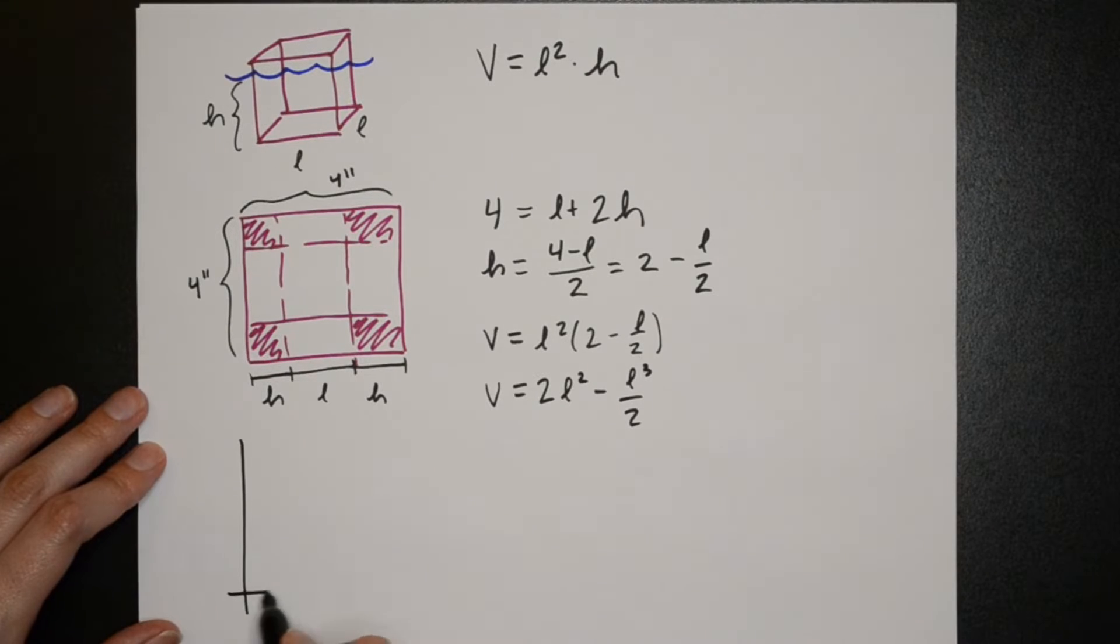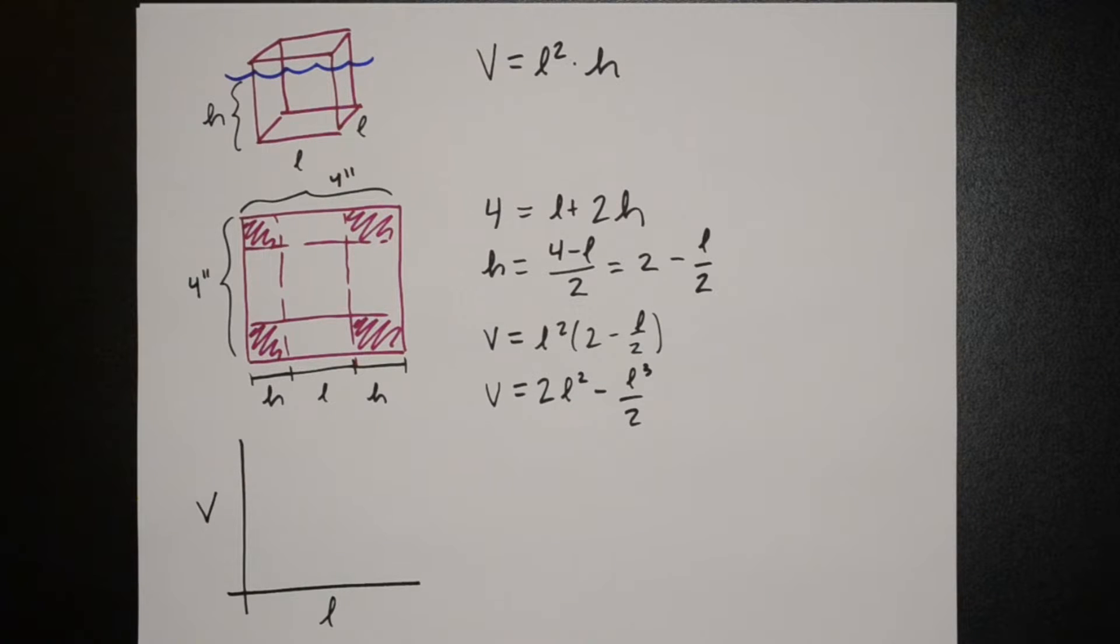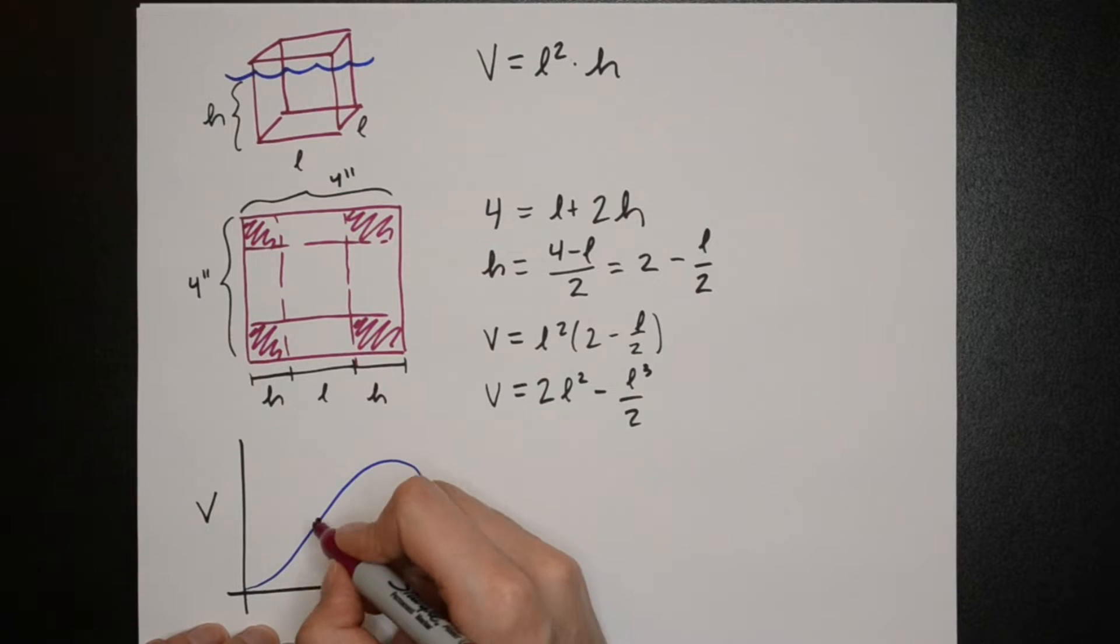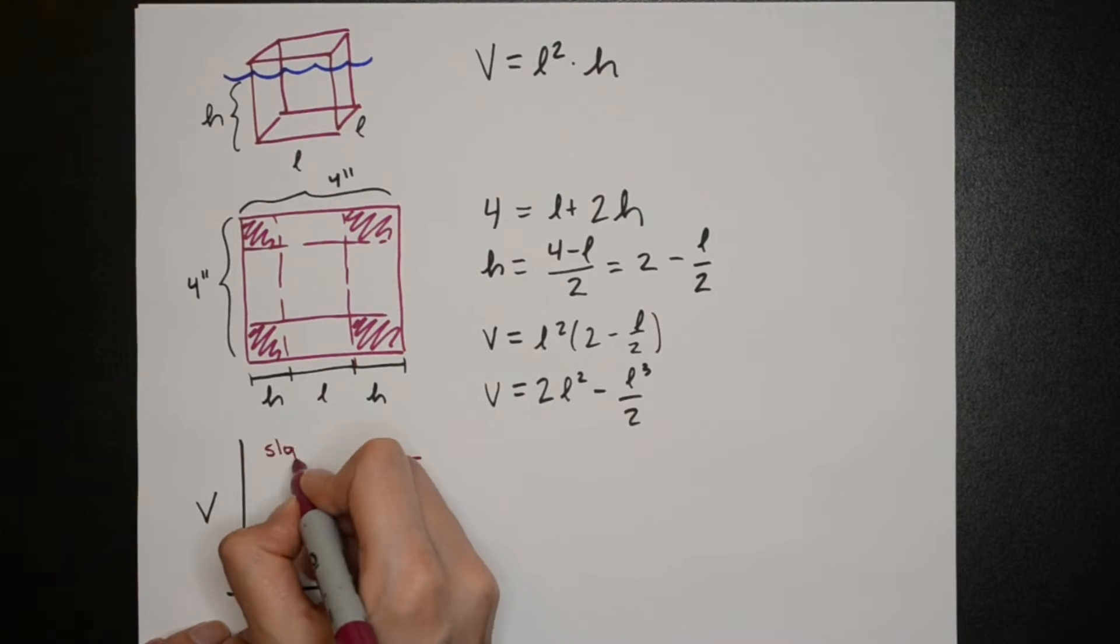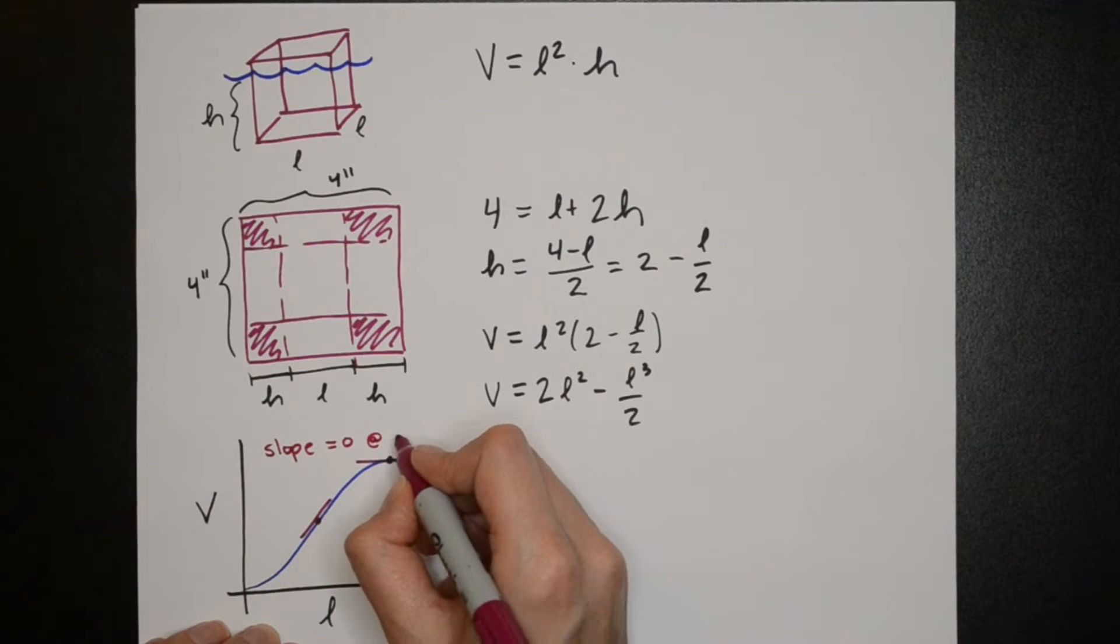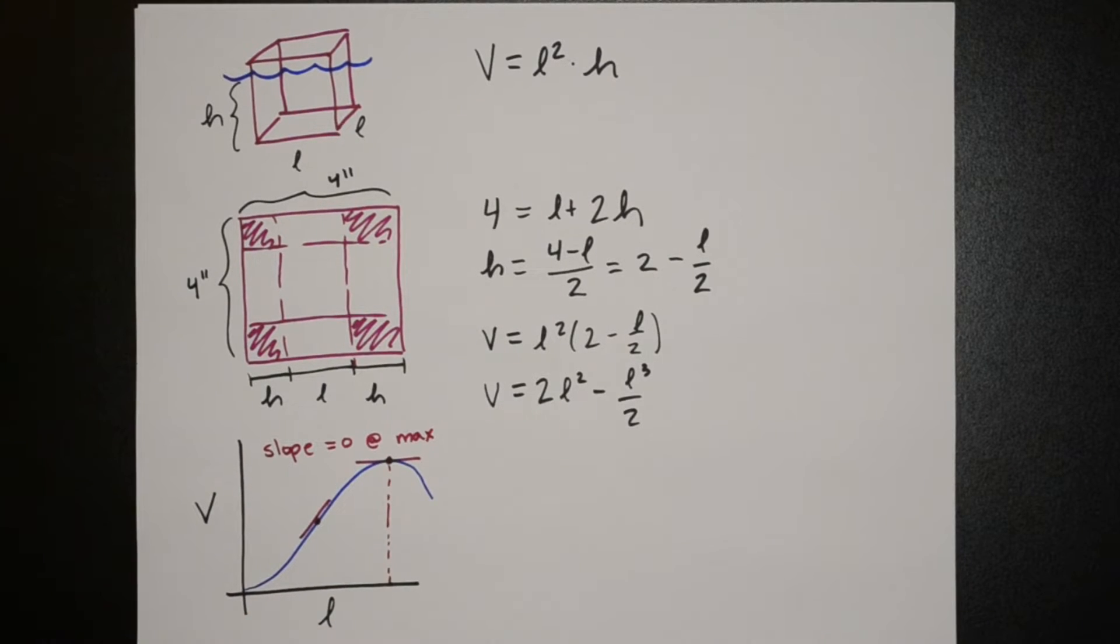When you plot volume as a function of length you'll get some curve and it will have a maximum. To find the slope of a line you can take the derivative and if we take the derivative at the maximum value our slope is going to be equal to zero.